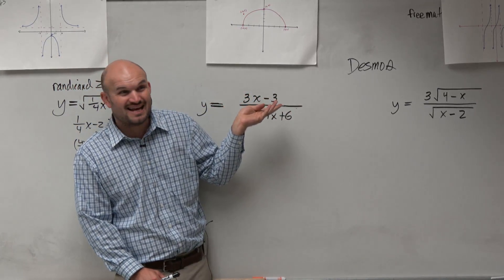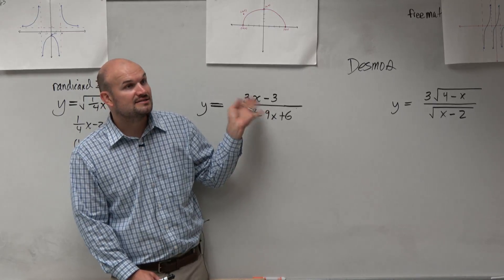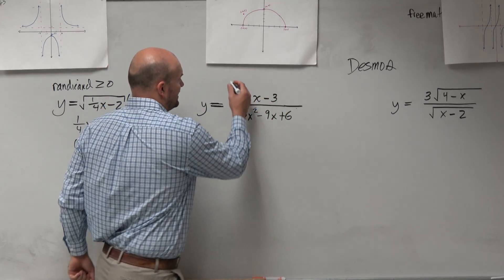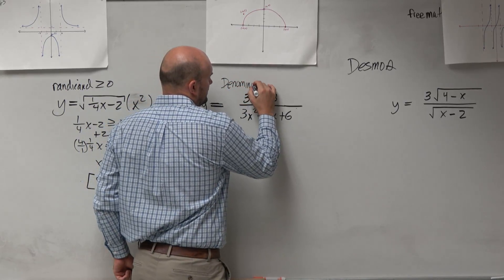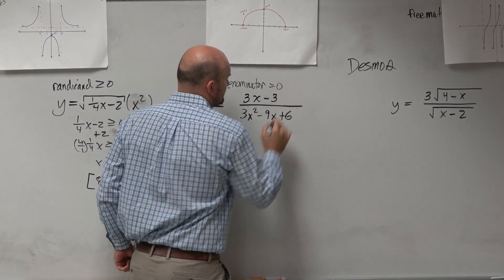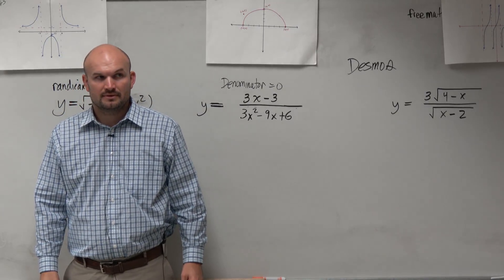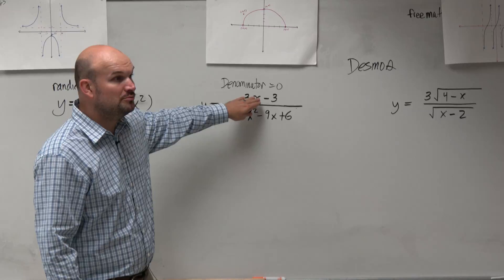The numerator is 3x minus 3. Is that a continuous function? Yes. So it's not going to affect our domain. The only thing that's going to affect our domain is the values when the denominator is equal to 0. That's the only thing that's going to affect our domain in this example, because our numerator is continuous.